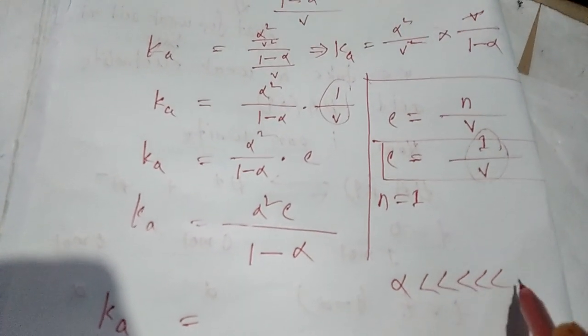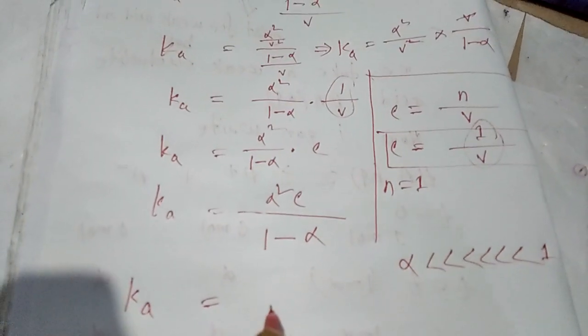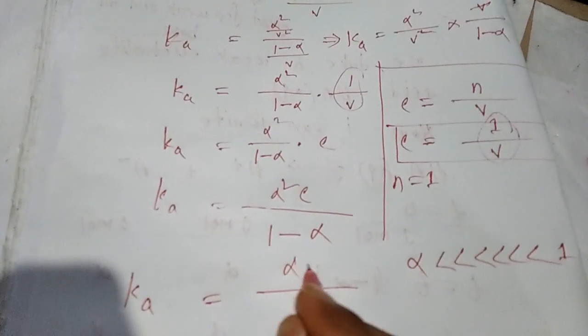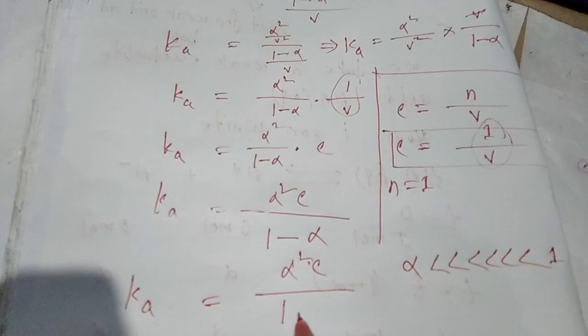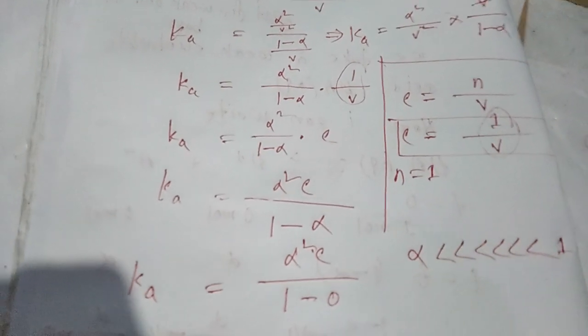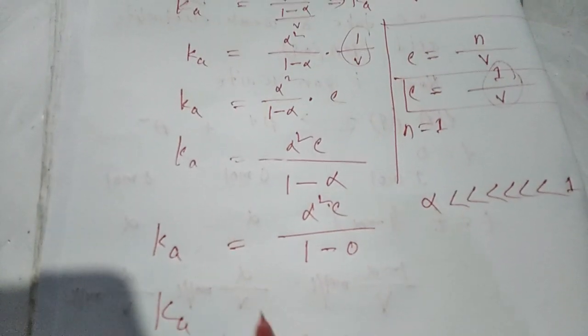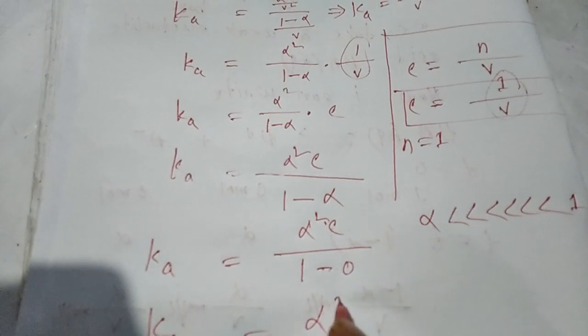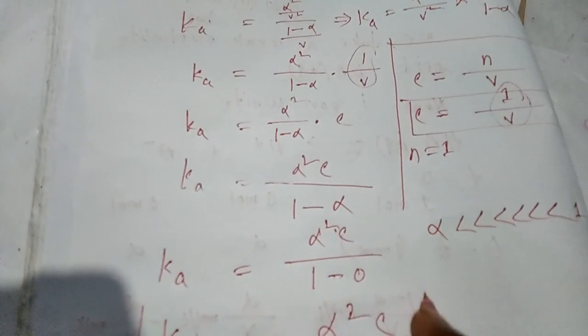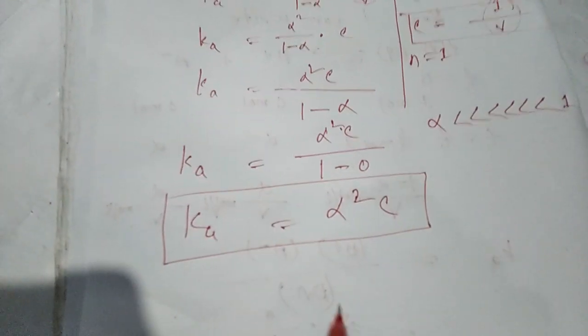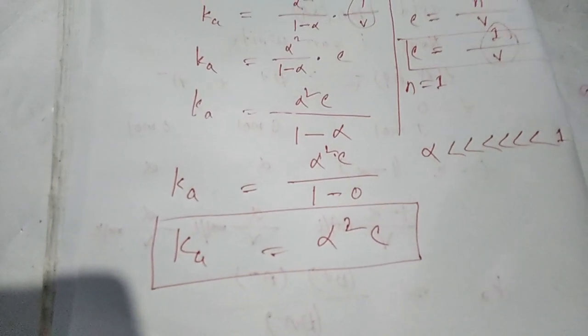For weak electrolytes, alpha is much less than one, so 1 minus alpha approximately equals 1. Therefore, Ka equals alpha squared C.